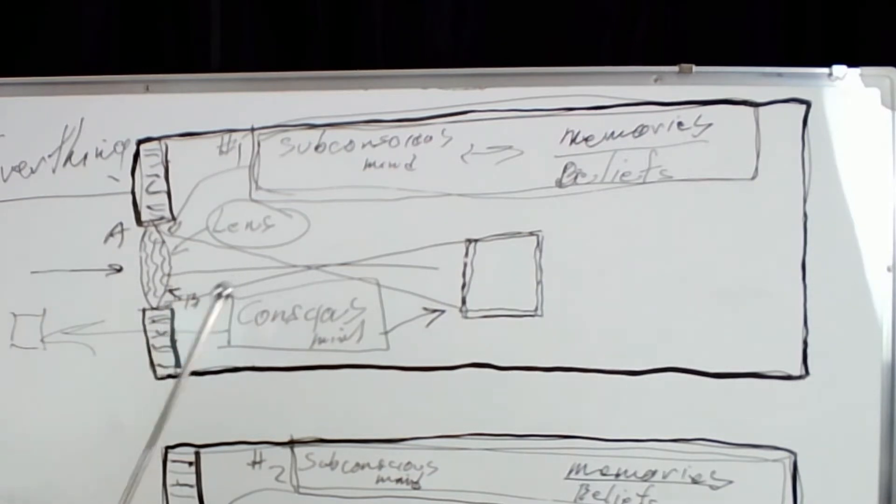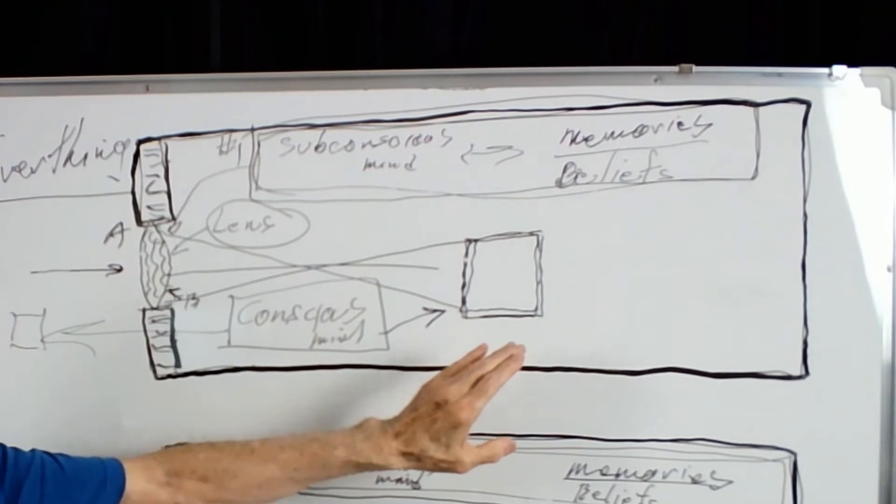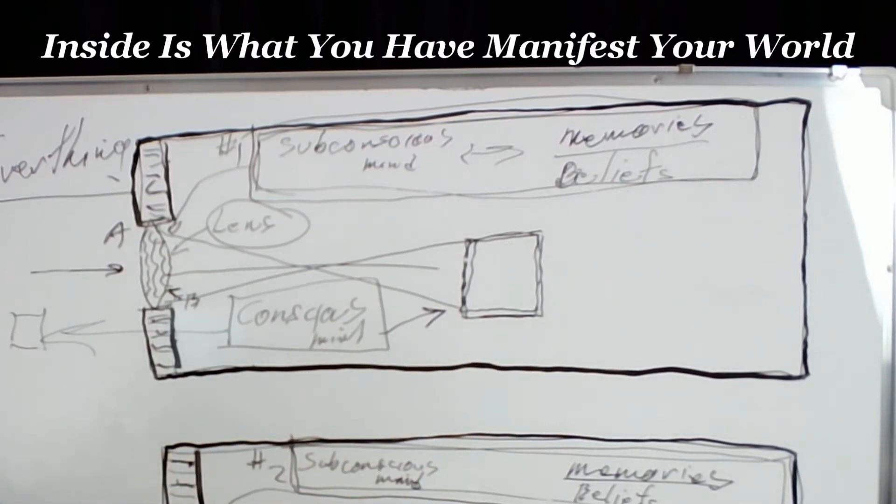This won't be there. So, but what does get through, now, outside, unmanifested information, inside, is what you manifest. So, inside of you, you manifest, what do you manifest? You manifest your world.